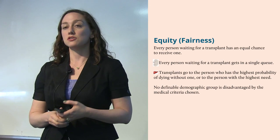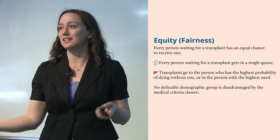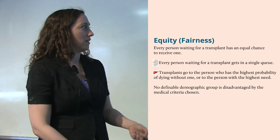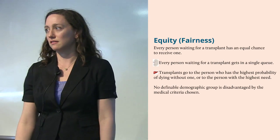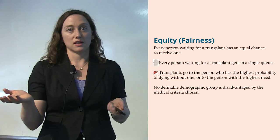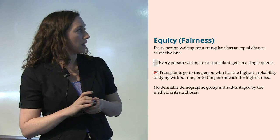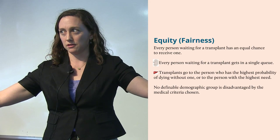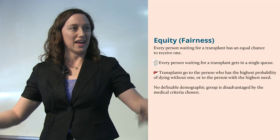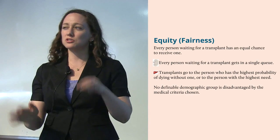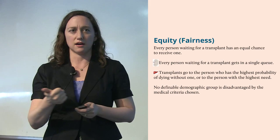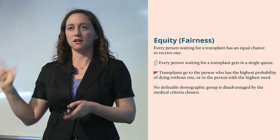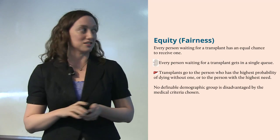There's a score called the MELD score — the Modeled End-Stage Liver Disease score — and the higher it is, the more likely you are to die in the next 90 days without an organ. So the transplant goes to the person with the highest probability of dying. For liver, strangely enough, there doesn't seem to be much conflict between the fairness metric and the utility metric — we try to get the organ to the highest MELD person, and the others will live long enough to access a different organ.